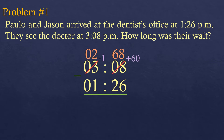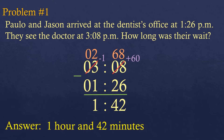So 68 minus 26 is 42, and 2 minus 1 is 1. Before finalizing, let's analyze the question: how long was their wait? It's asking for how long, not for a time. So 1:42 doesn't mean 1:42 in the afternoon — it means 1 hour and 42 minutes.